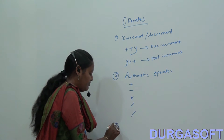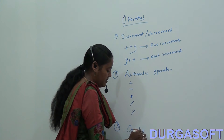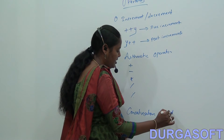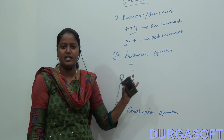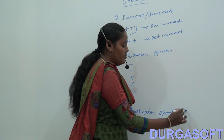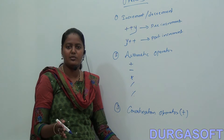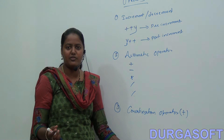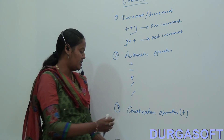The third one is the concatenation operator. Here we are using the plus symbol for both addition and concatenation. If you perform the plus symbol for two variables, that will be the sum of the variables. If you perform the plus symbol for two strings, that will be like appending the two string values.